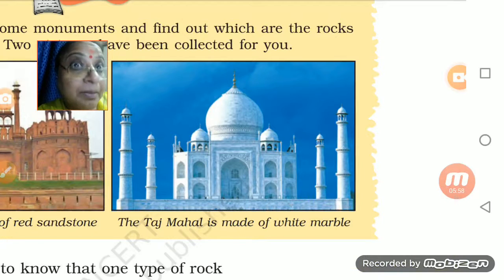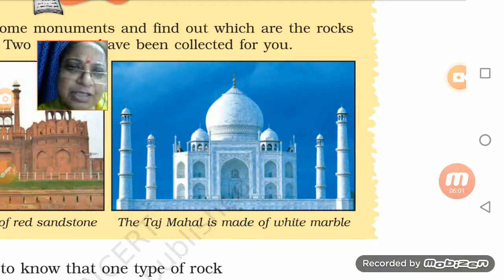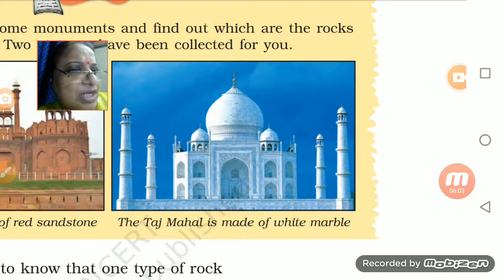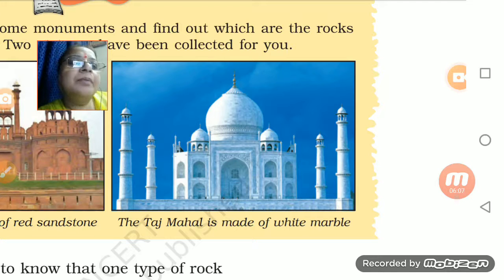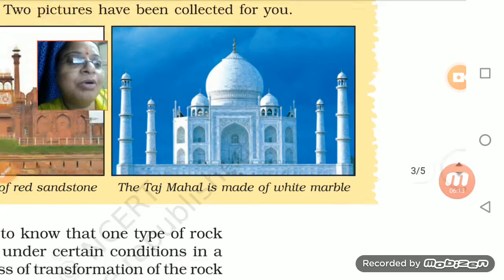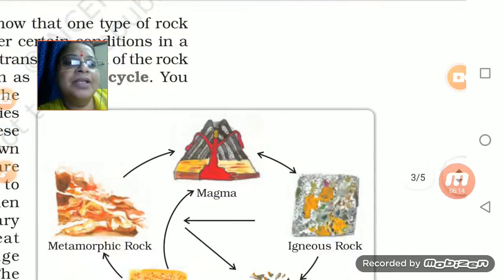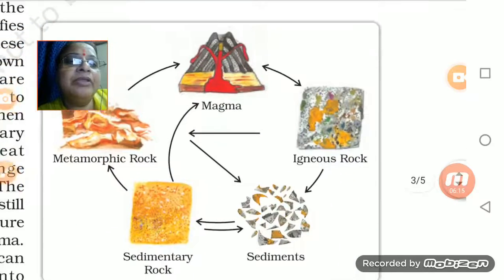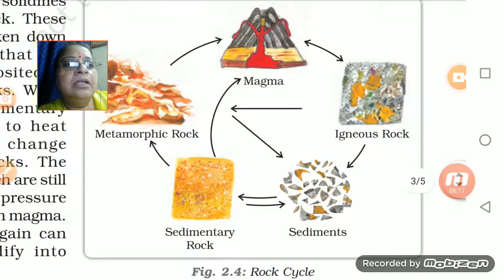White marble — igneous and sedimentary rocks when they change, they come in the shape of marble. That is sangar marmar — that kind of form of rock. We were talking about the rock cycle.